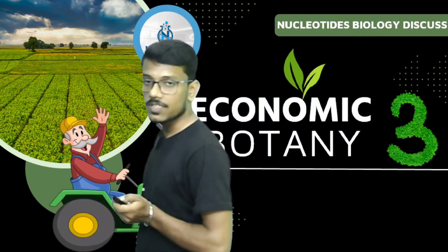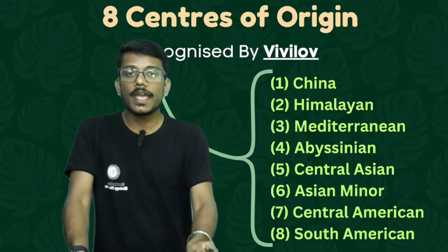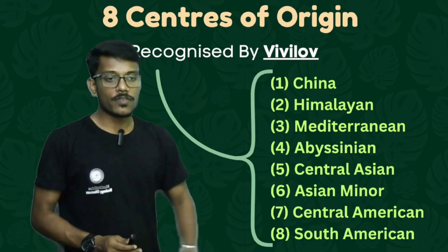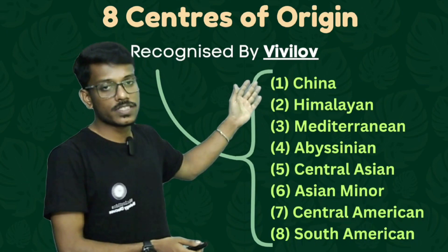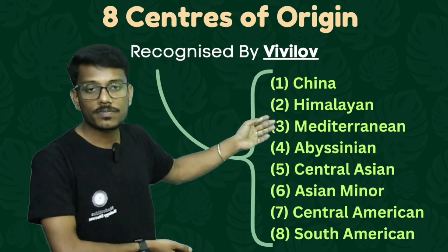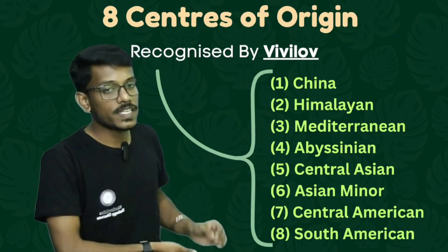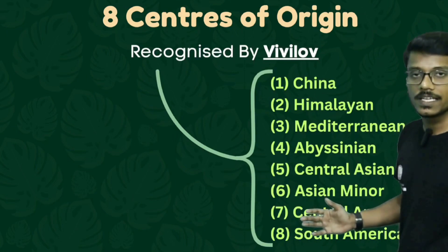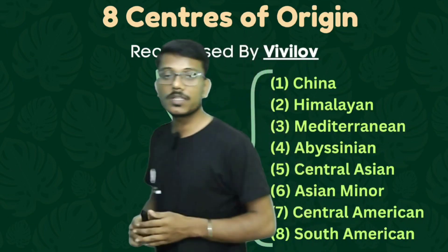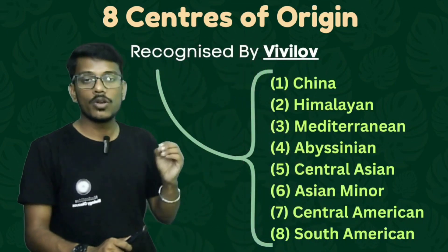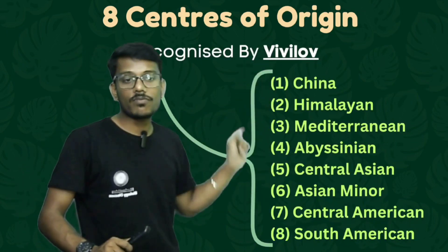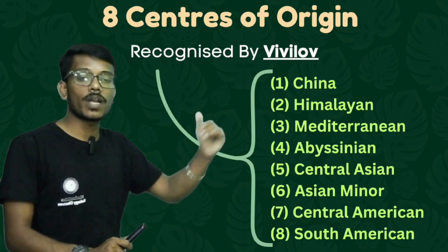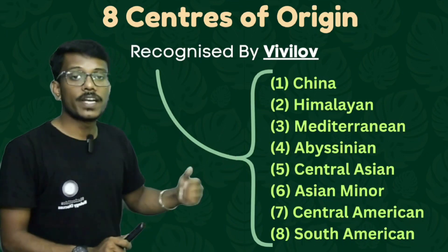So let's discuss the eight different centers of origin of crop plants recognized by Vavilov. The first one is the Chinese center of origin, then the Himalayan center of origin, the Mediterranean center of origin, then the fifth one: Central Asian, Asia Minor, Central American, and South American center of origin. These are regions of the whole world from which different crop plants are thought to have originated.